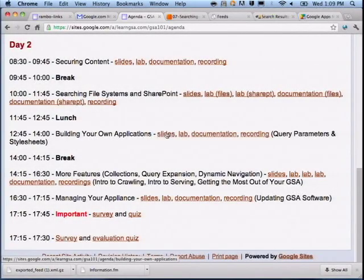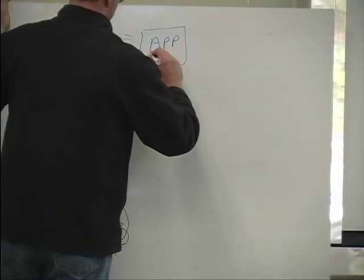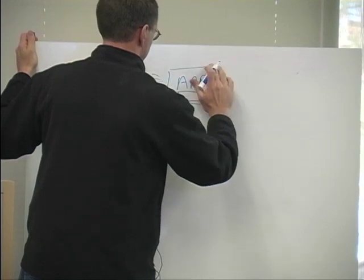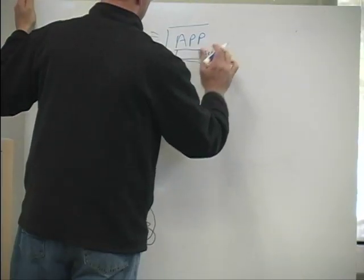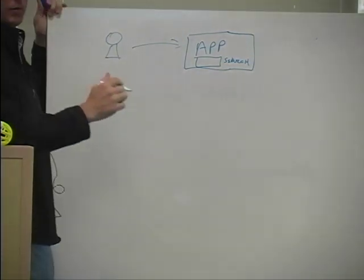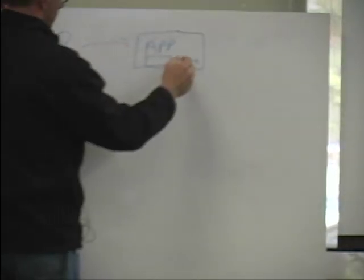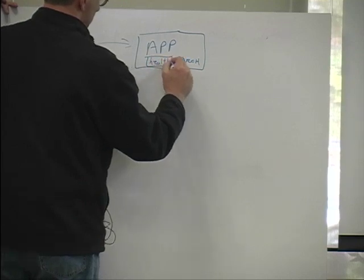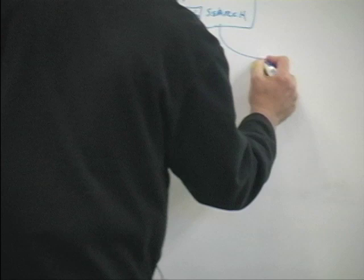We want to talk about how to build your own application. If you're going to build an application that sits as a proxy between users, and if you're going to consider doing this with security, it can be a little bit challenging. You have to be aware that if you have an app or a portal that has a search box, when the user enters a search term like maybe 'health' and clicks Search, what is this going to send to the GSA?